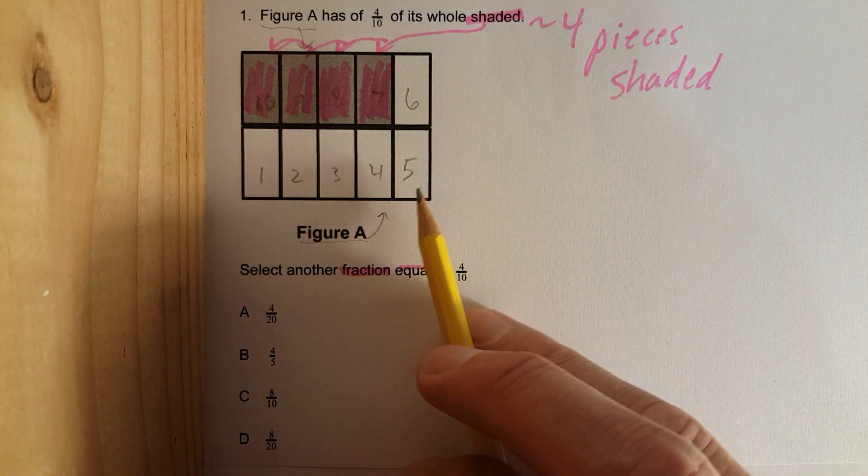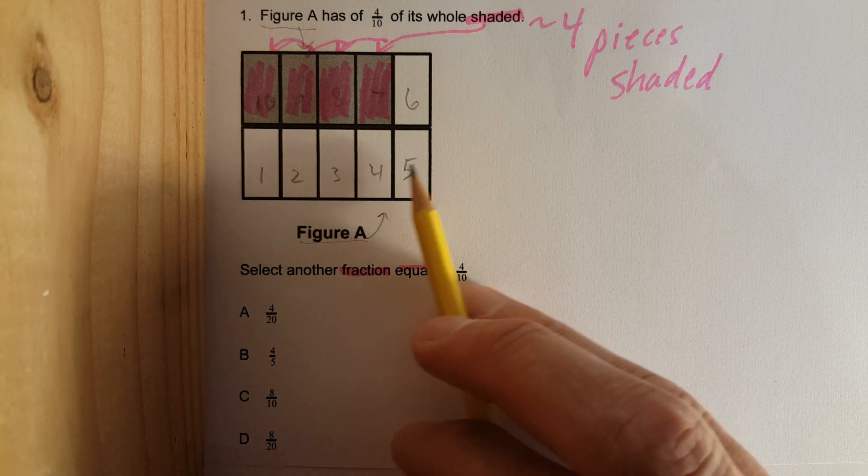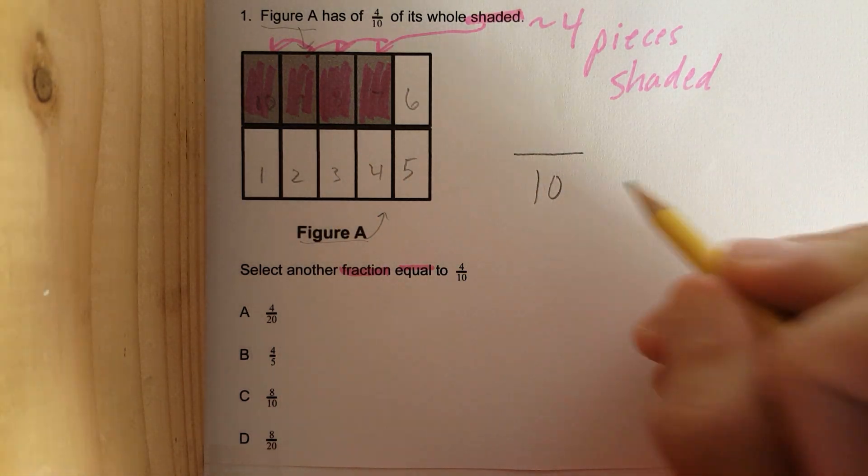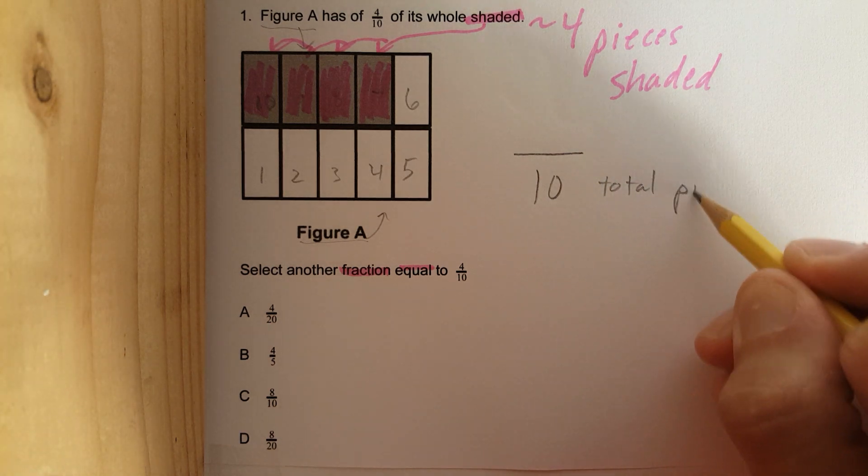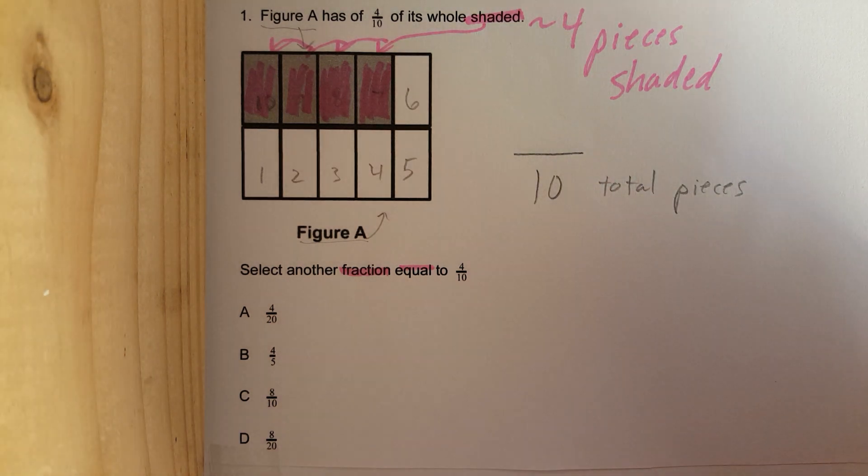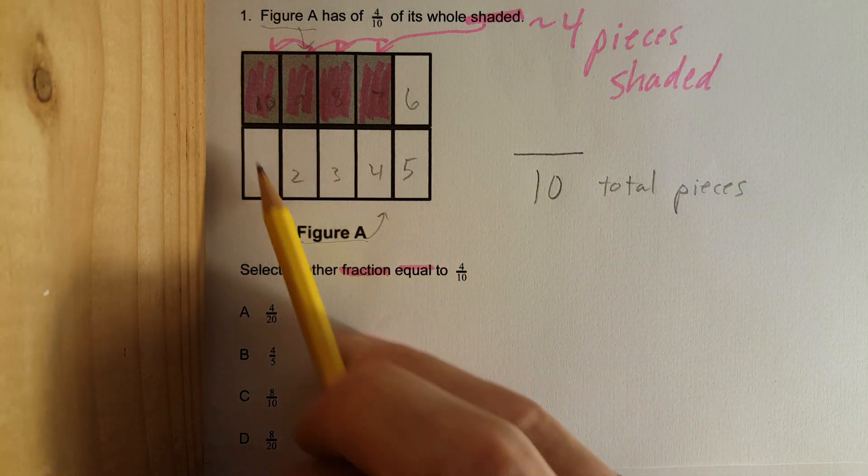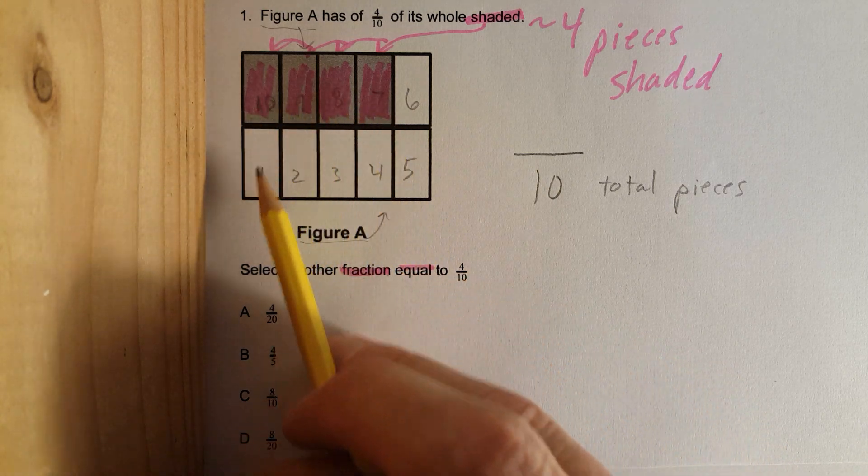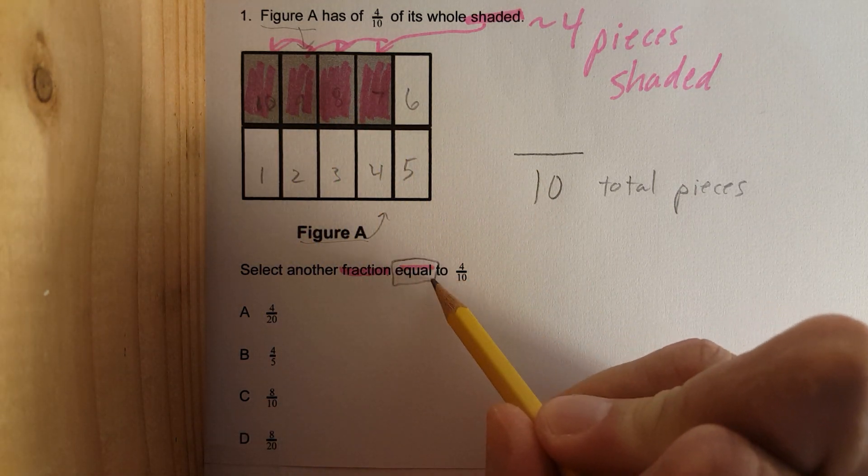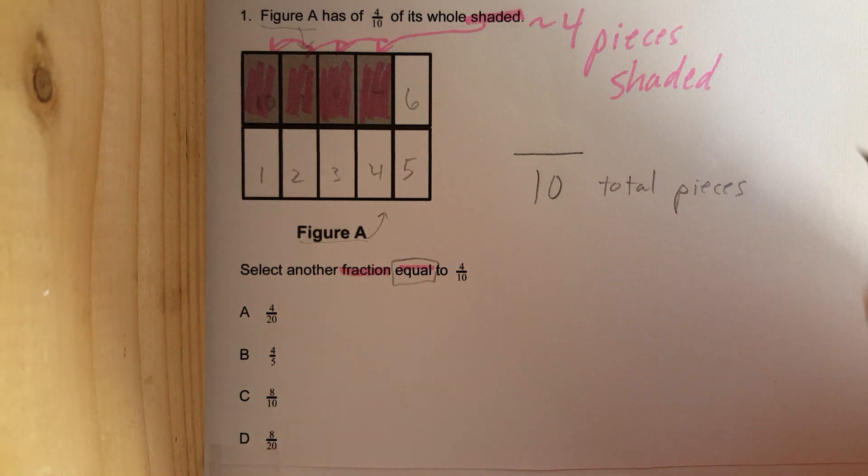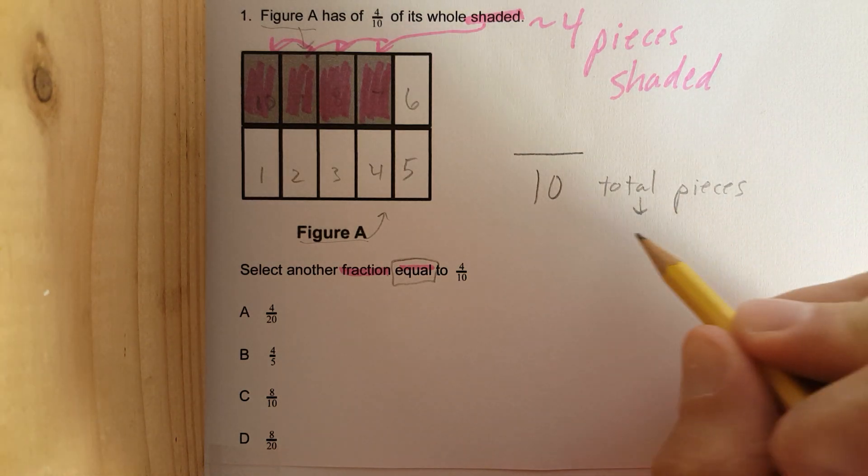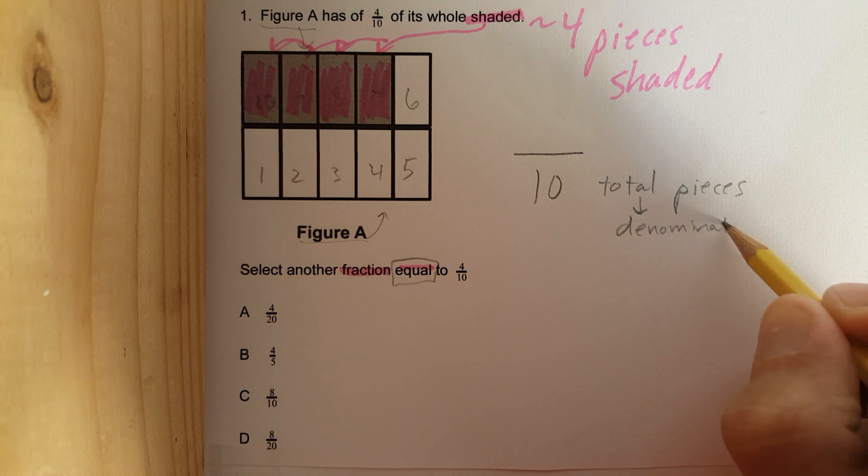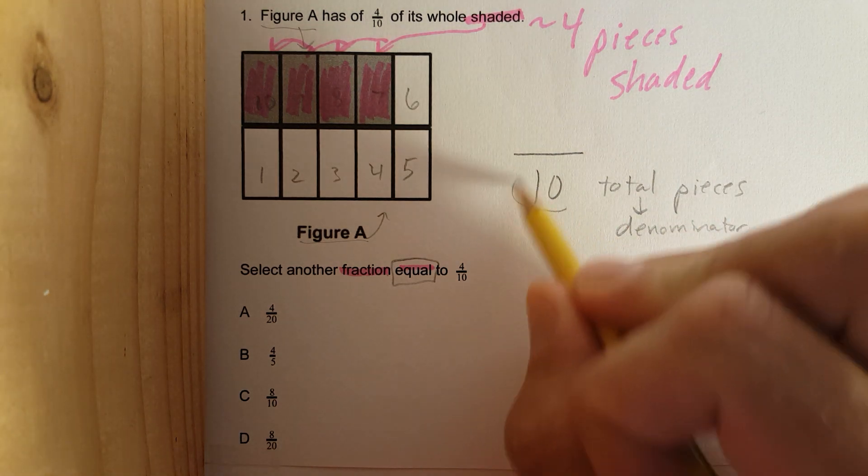And they took this entire cake and cut it into 10 pieces. So, I'm going to write it like this. 10 total pieces. It is still one entire cake, but let's say you have 10 people, and they all want the same equal slice. Well, you cut it 10 times. This is also known as the bottom number, which is the denominator. Okay? 10.